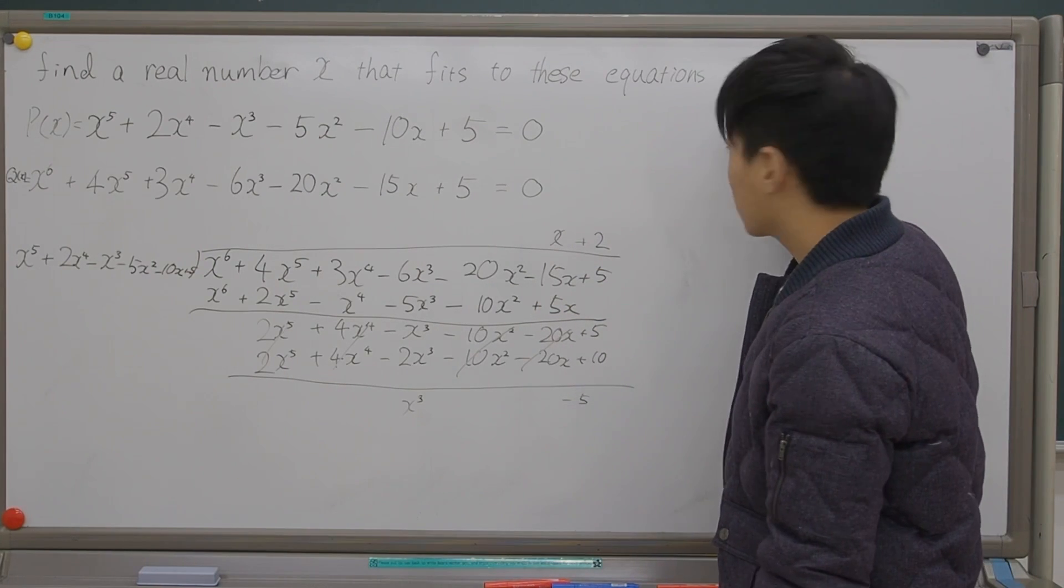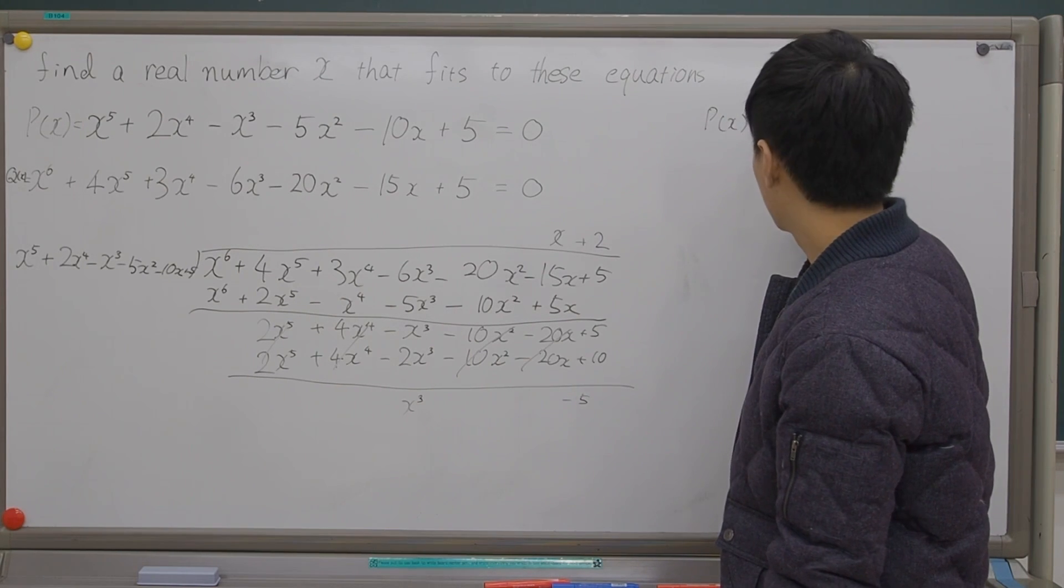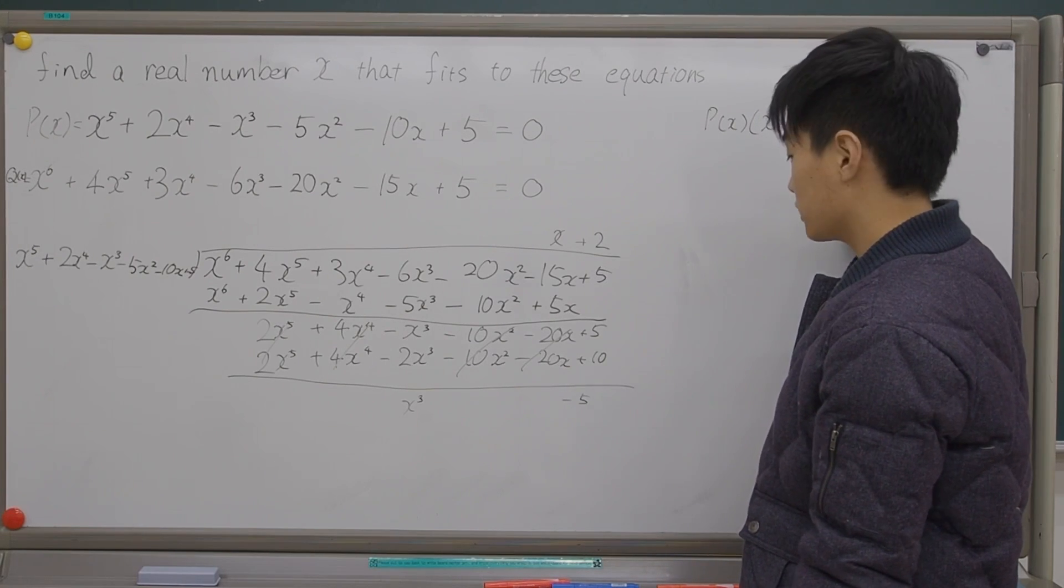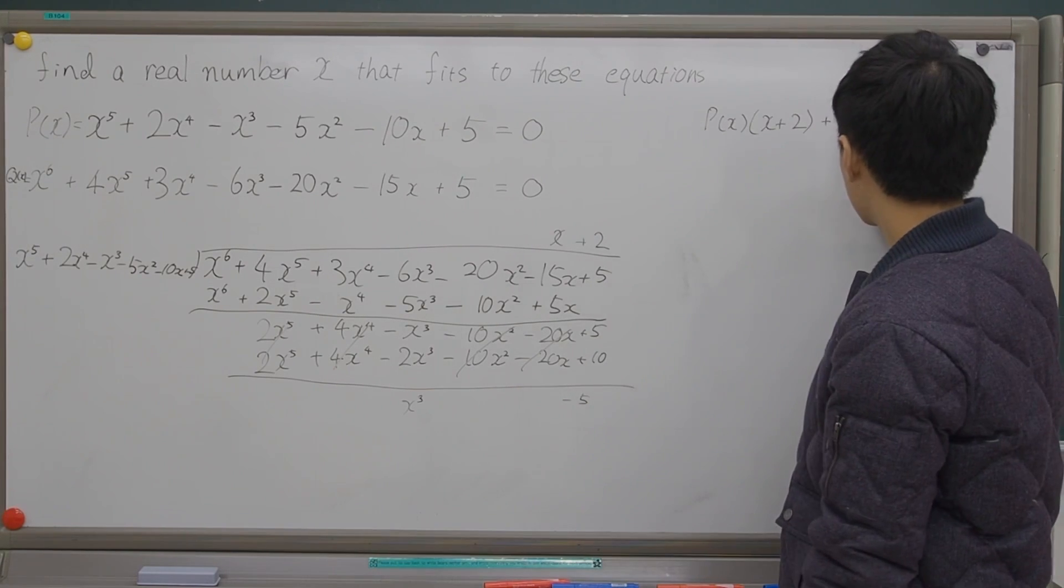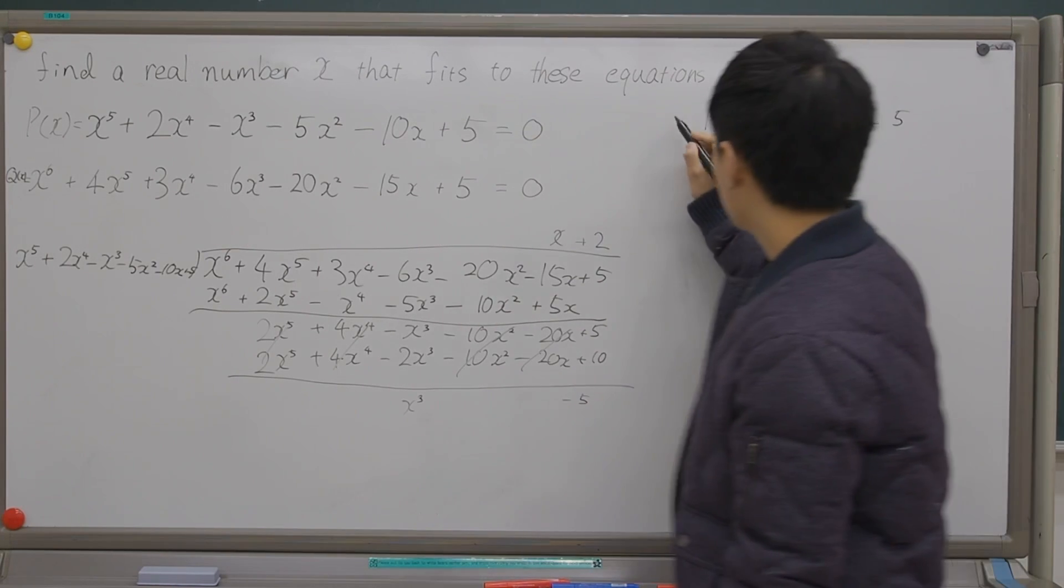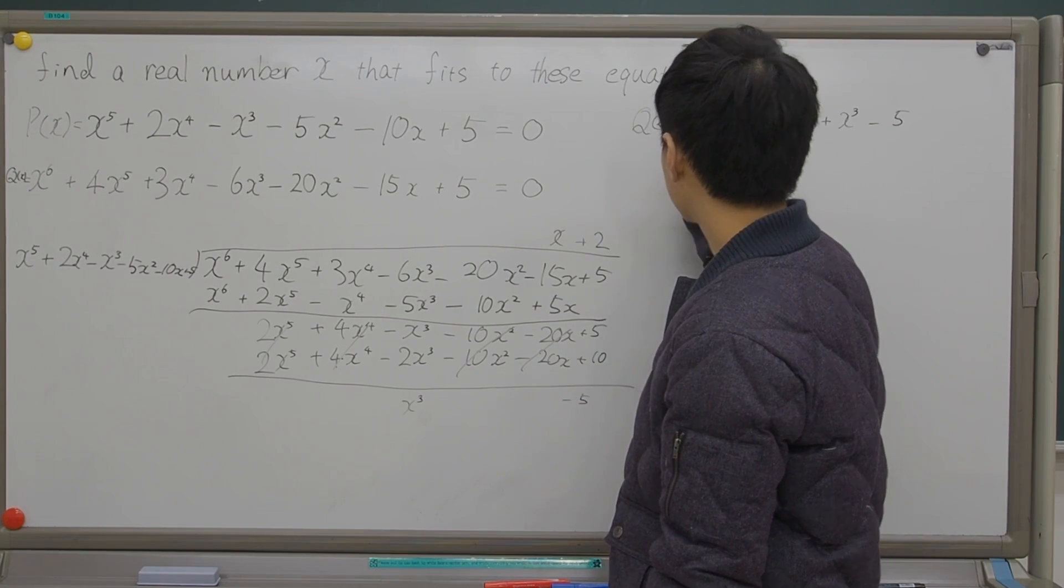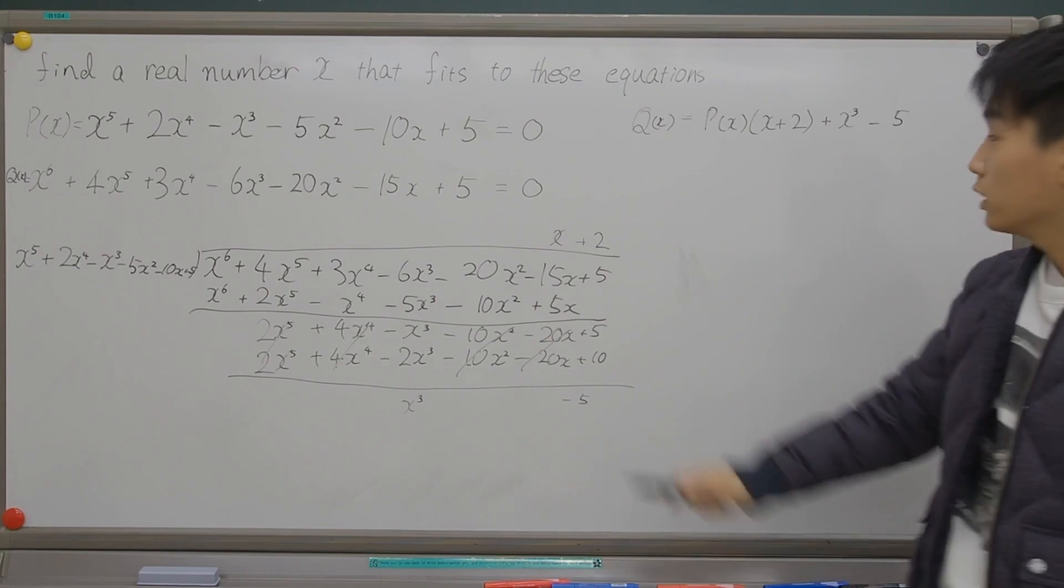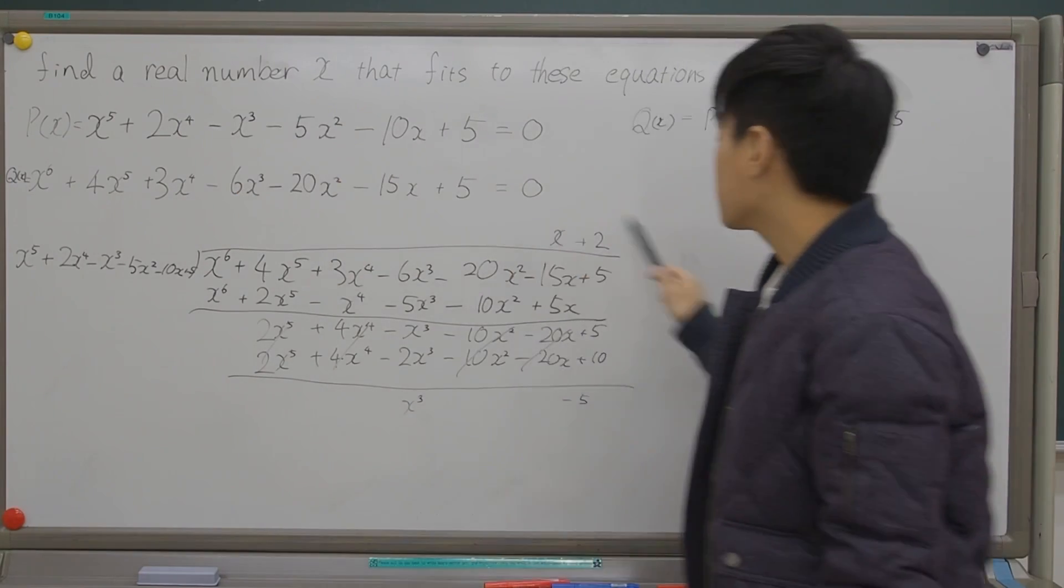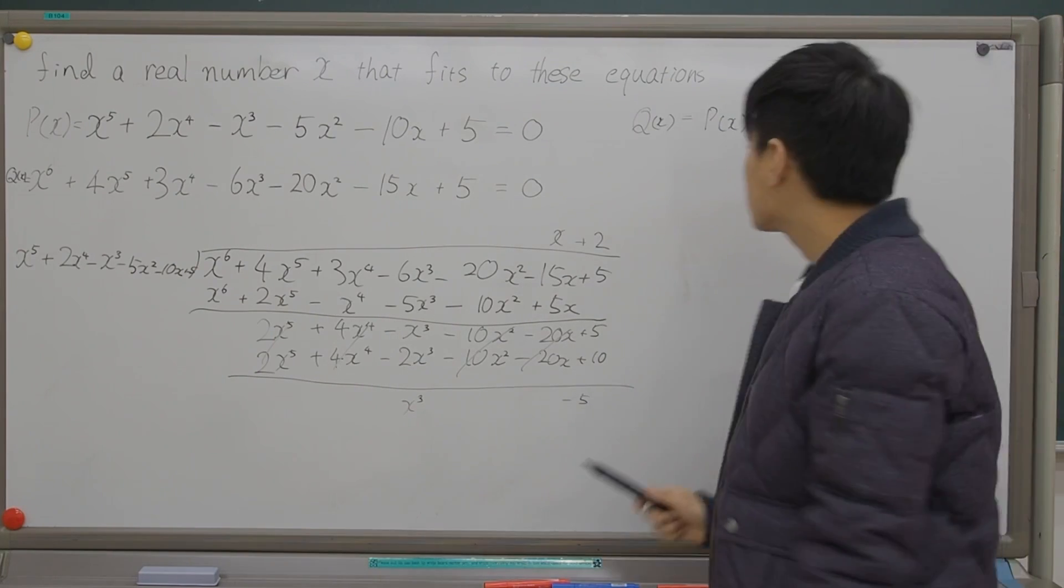p(x) times (x + 2) plus what will be left here - x^3 minus 5 - equals q(x). Right. So to make this equation, you just simply multiply this by this and add what will be left, the leftovers.